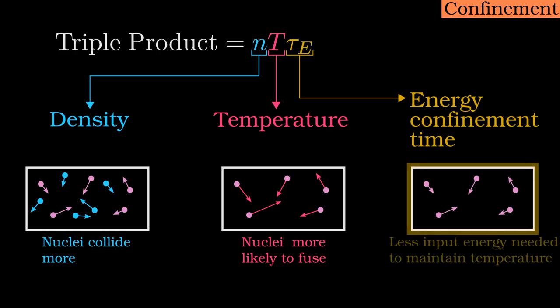The energy confinement time is usually defined as the average time it takes for a unit of energy to escape the plasma. The longer the energy confinement time, the lower the rate at which energy is lost and the lower the amount of input energy which must be provided to keep the reaction going. I want to make it clear that the triple product is not an absolute measure of the fusion power output or the fusion gain, but rather it is merely a figure of merit allowing useful comparisons.